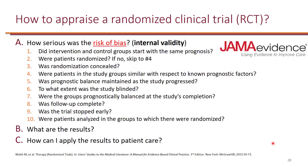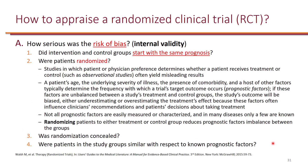When we evaluate the internal validity, we're basically evaluating how serious was the risk of bias. Here's a methodology from JAMA Evidence. JAMA is the Journal of American Medical Association, and they have formulated a systematic way to appraise a randomized clinical trial.